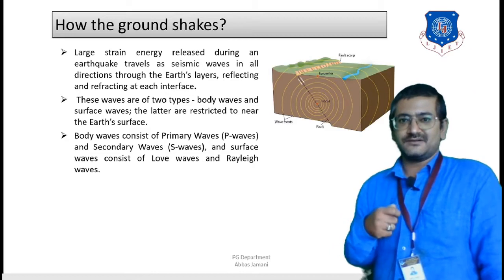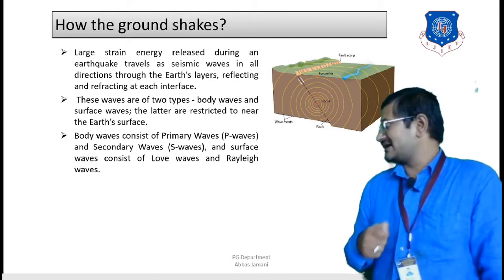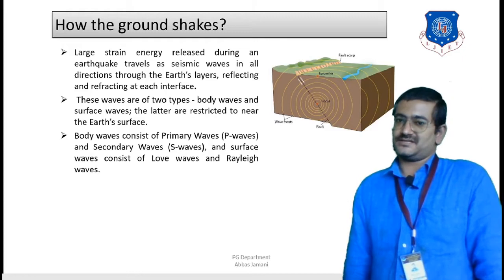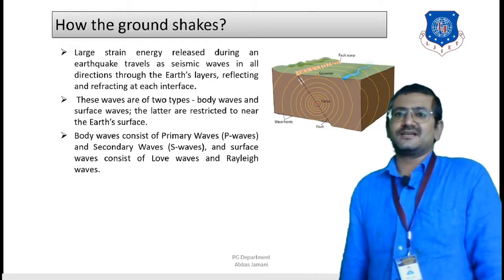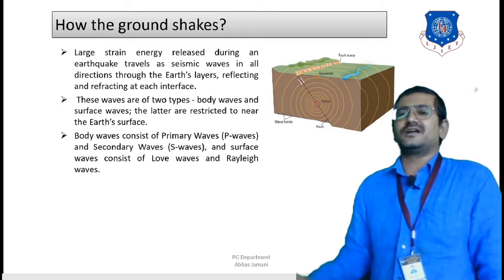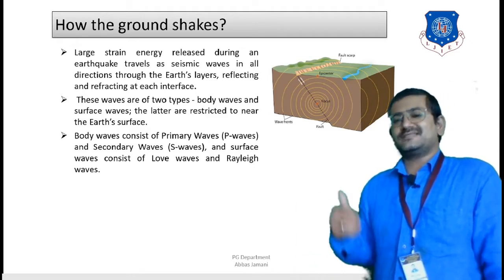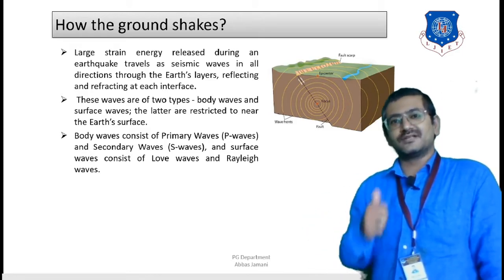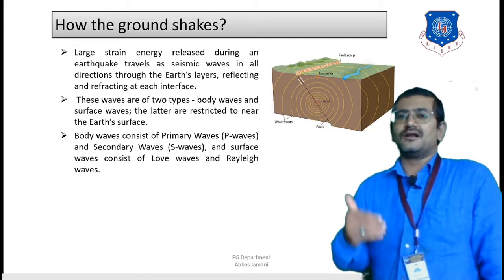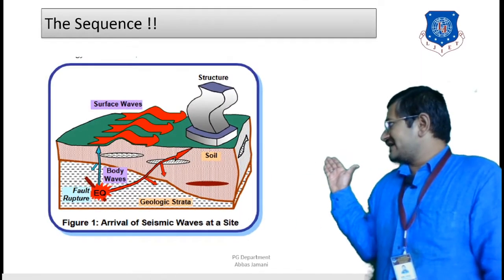The question is: are there different types of seismic waves? Yes — seismic waves are primarily classified into two categories: body waves and surface waves. Surface waves remain closer to the surface of the earth, while body waves travel from the focus point toward the epicenter and get reflected or refracted along the way. Body waves are further divided into P waves (primary waves) and S waves (secondary waves). Surface waves are divided into Love waves and Rayleigh waves.